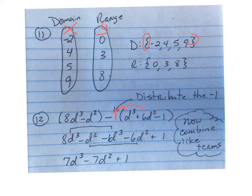8d to the third minus 1d to the third is 7d to the third. And then you have a negative 1d squared and a minus 6d squared, that's a negative 7d squared, and then, of course, the plus 1.